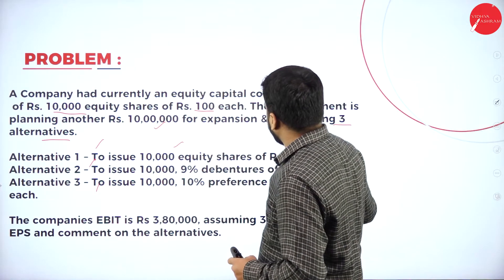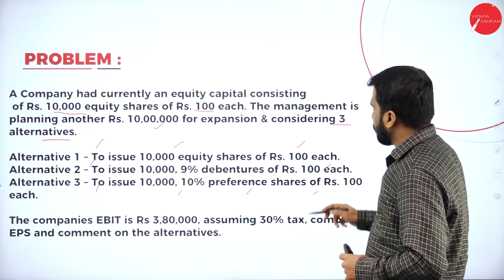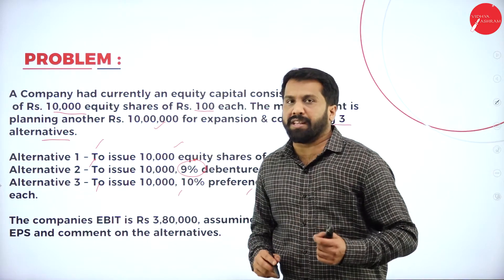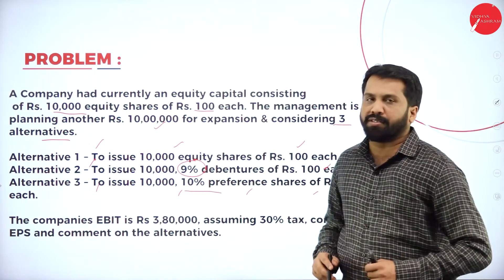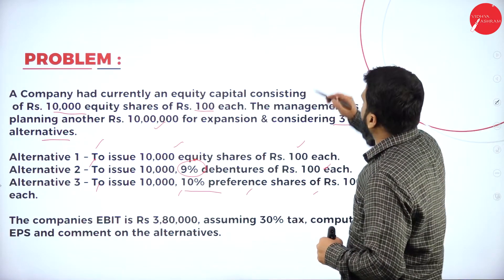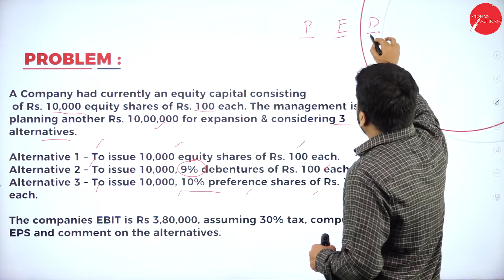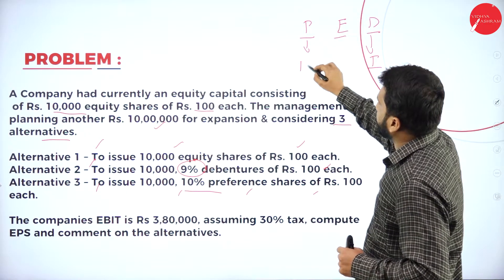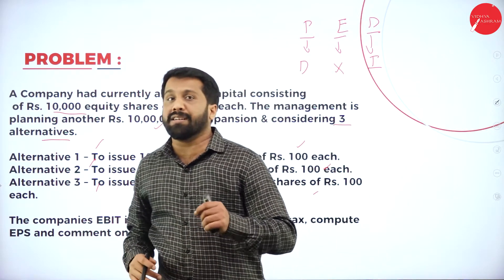Alternative one: issue 10,000 equity shares of Rs. 100. Alternative two: issue 10,000 debentures of Rs. 100 at 9%. While calculating, you should compute 9% interest for debenture holders. Alternative three: issue 10,000 preference shares of Rs. 100 at 10% dividend. Remember — debenture holders always get interest, preference shareholders always get dividend, and equity shareholders get nothing in this calculation because we are computing earning per share.